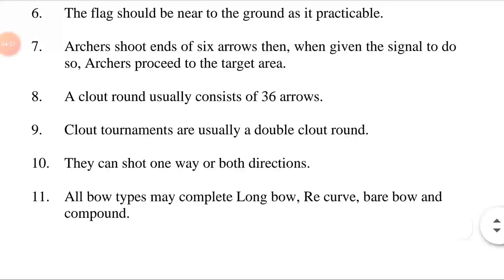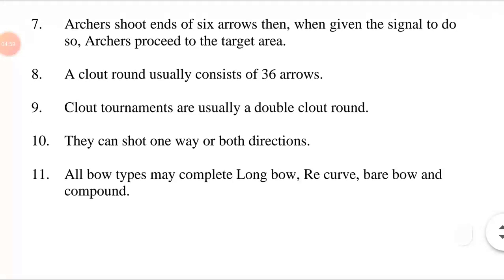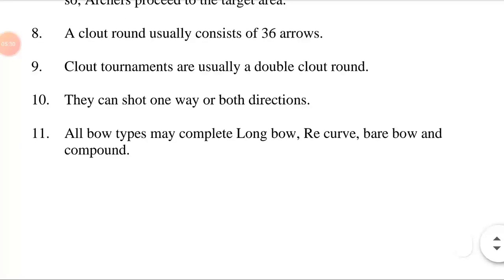Archers shoot ends of six arrows, then when given the signal, proceed to the target area. An archer shoots either three arrows per end in indoor shooting or six arrows per end in outdoor shooting. After each end, the competitors walk to the target to score and retrieve their arrows.